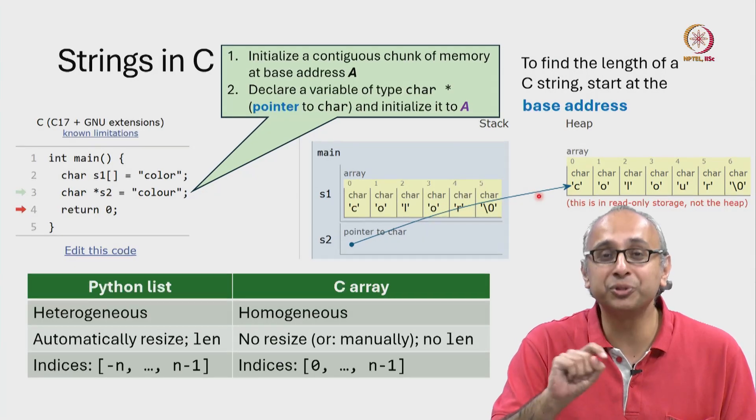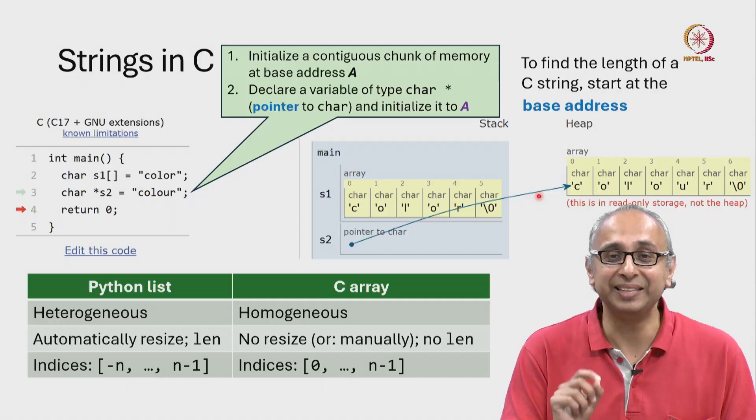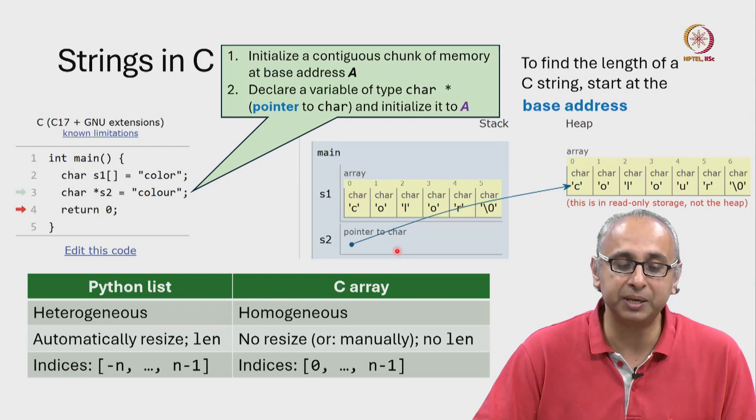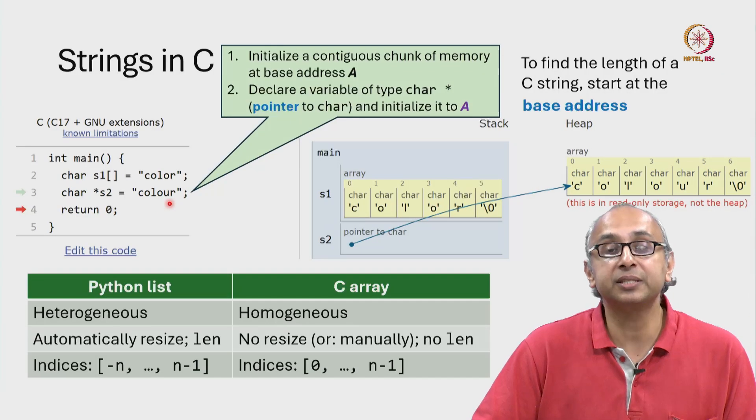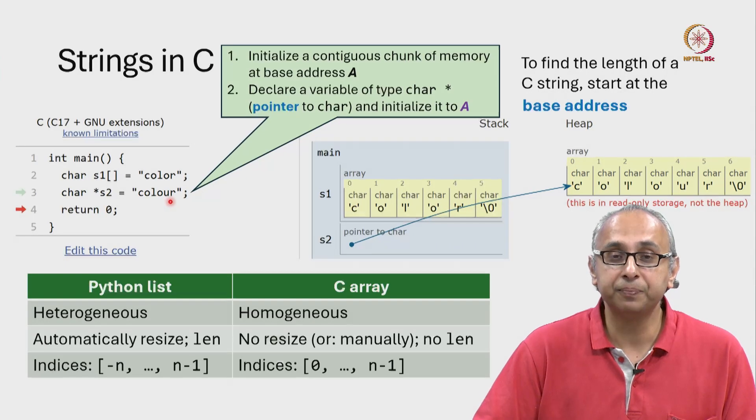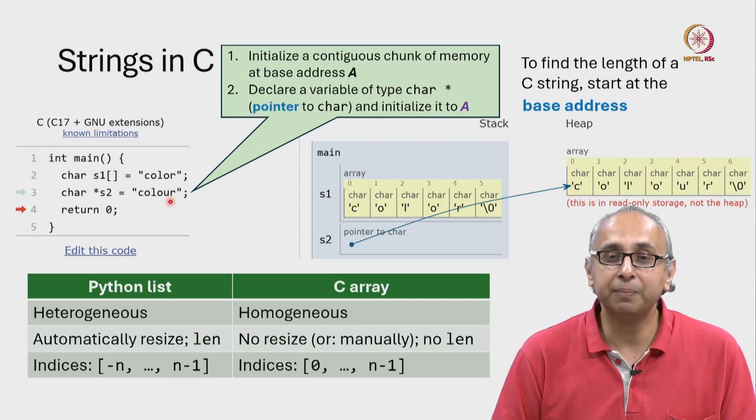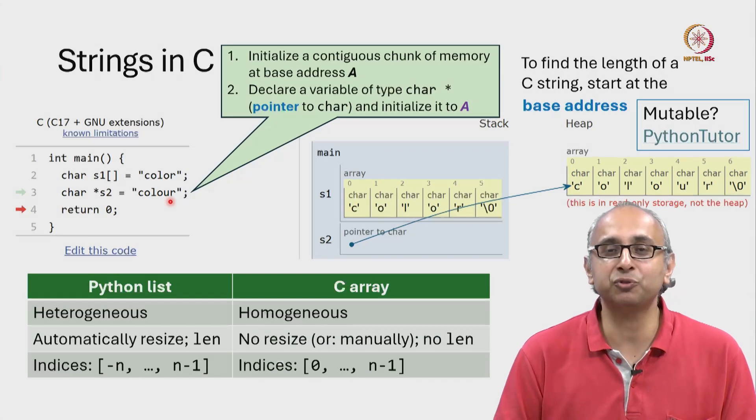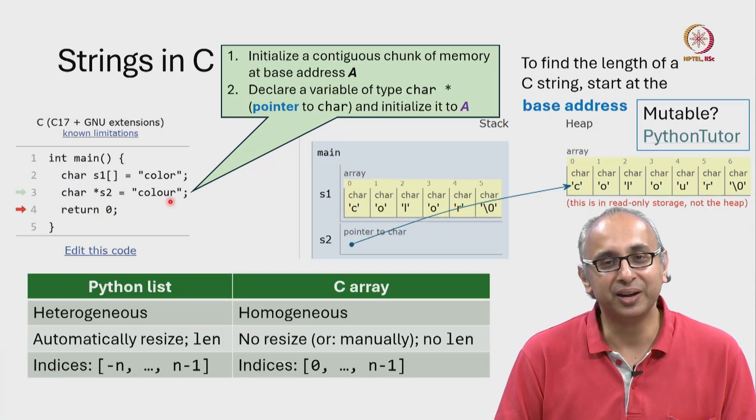But please keep in mind, those arrows don't actually exist. This is just some address and that address is being stored over here. So this is what this type of string means. These are two ways in which you can initialize strings. They do have some important differences which we will explore right now.